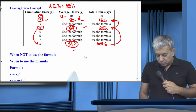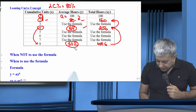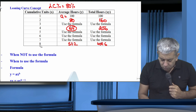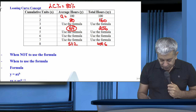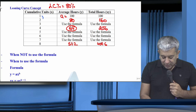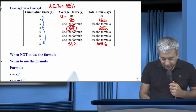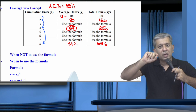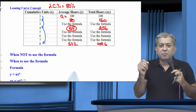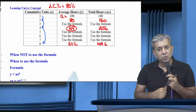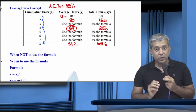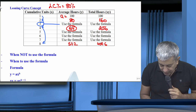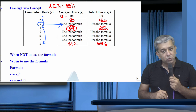This table — units 1, 2, 4, 8 — you can complete without using log tables. Whenever the units double, apply the learning percentage to average hours. But for values NOT in this doubling series (e.g., 3 units), aapko formula use karna padega. If you need average hours for three units, use the formula.